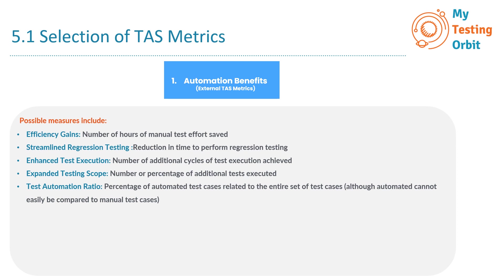Another measure is the test automation ratio: the percentage of automated test cases relative to the entire set of test cases, although automated tests cannot easily be compared to manual test cases. Imagine you have a group of test cases — some automated and some manual — and you want to know what portion of your total testing effort is done through automation. However, automated and manual test cases are like apples and oranges; they serve different purposes and are used in different situations, so directly comparing them is not straightforward. You can calculate this percentage to understand the balance between automated and manual testing, but it doesn't tell you which is better or more effective.